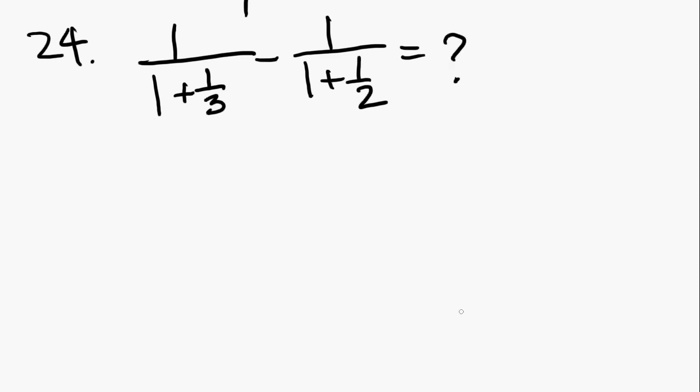Alright, let's look at number 24. Number 24 says, 1 over 1 plus 1 third, minus 1 over 1 plus 1 half. Okay, so we know that 1 is the same as 3 over 3, and 1 is also the same as 2 over 2. So if you add these up on the bottom, what you get is 4 over 3 minus 1 over 3 over 2.